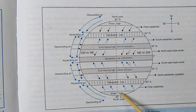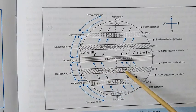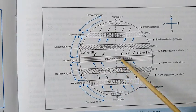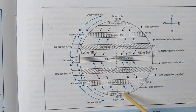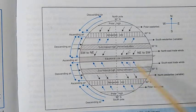The secondary circulation consists of periodic or seasonal winds. Periodic winds include land and sea breeze. Seasonal winds include monsoon winds, cyclones and anti-cyclones. The third category is the tertiary circulation which includes all local and variable winds.